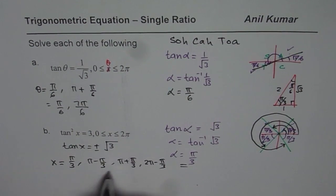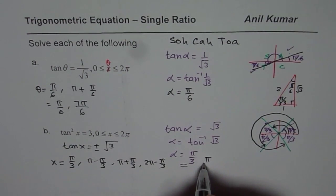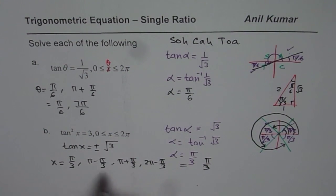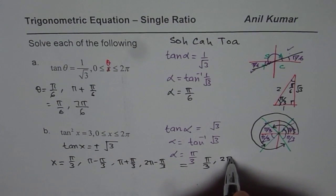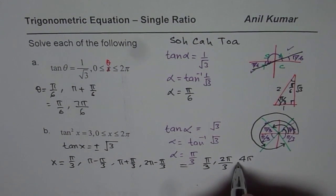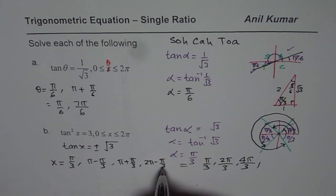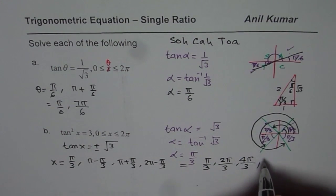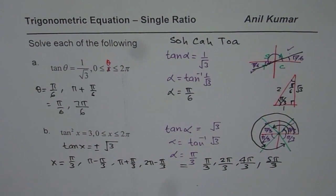Write down your answer. So you have pi by 3, then this is 2 pi by 3, then we have 3 plus 1 is 4, 4 pi by 3, and lastly 6 minus 1 is 5 pi by 3. So you have 4 different answers for this question.